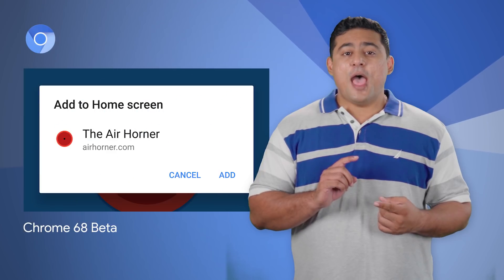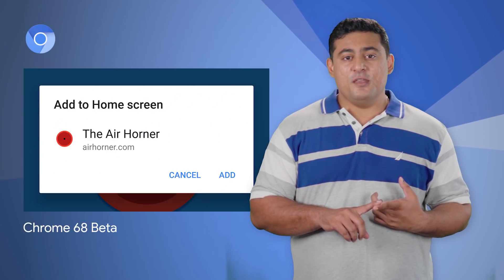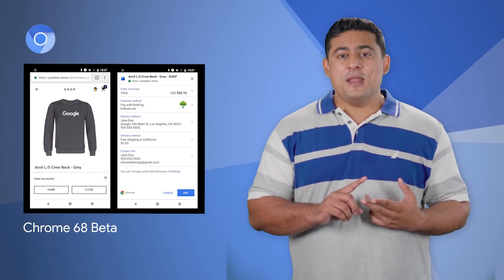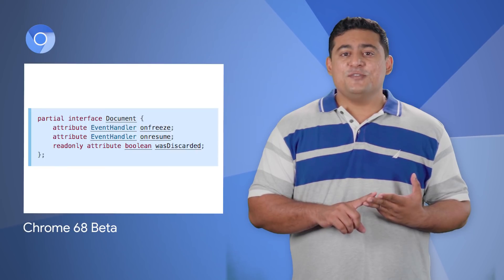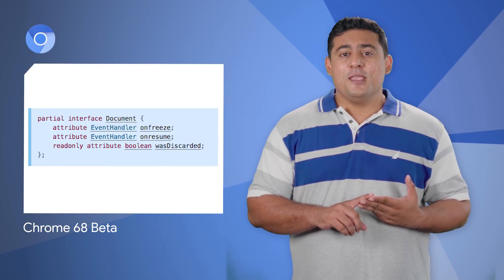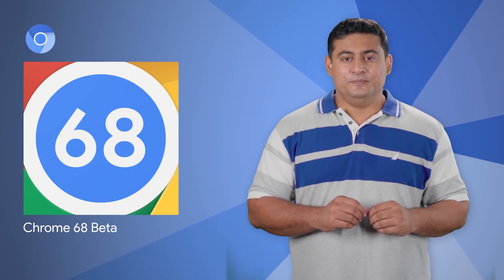Chrome 68 Beta is now available and includes a new add-to-home screen behavior for Progressive Web Apps, the Payment Handler API, the Page Lifecycle API, and more. Take a look at the post for all the details, including screenshots and code.